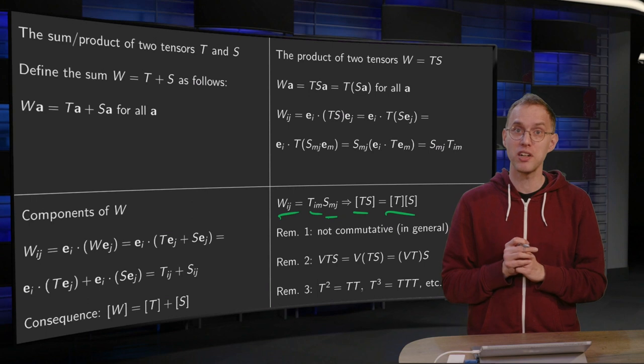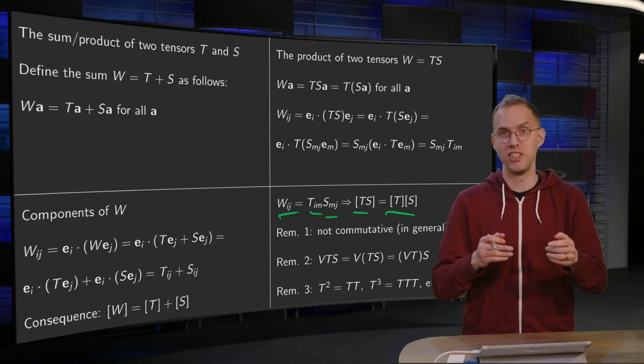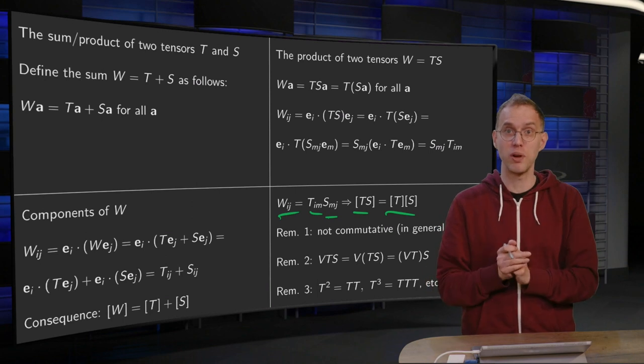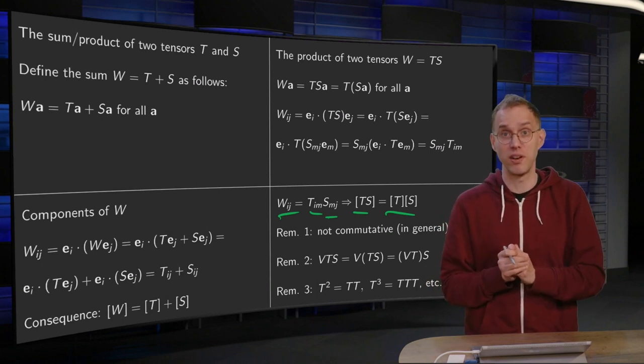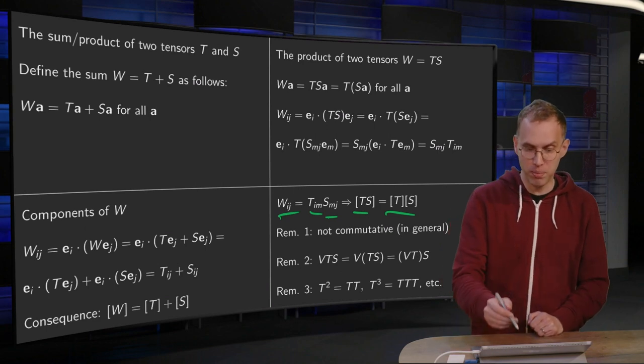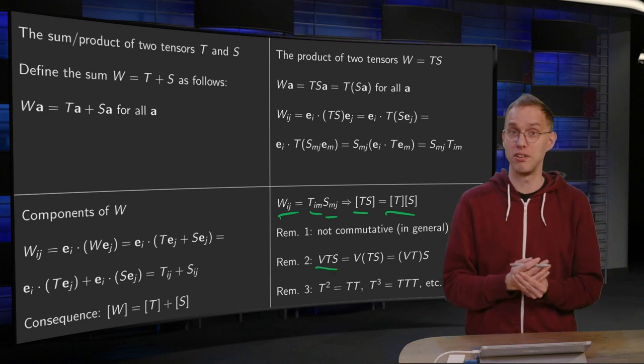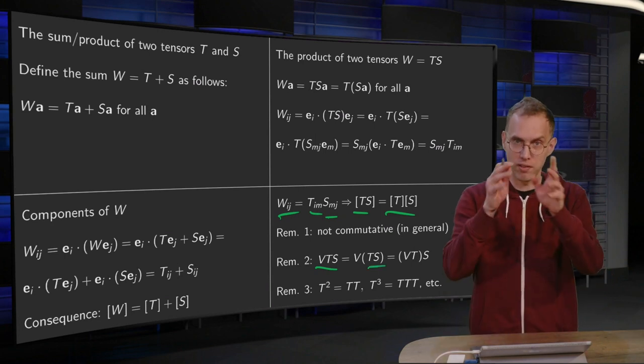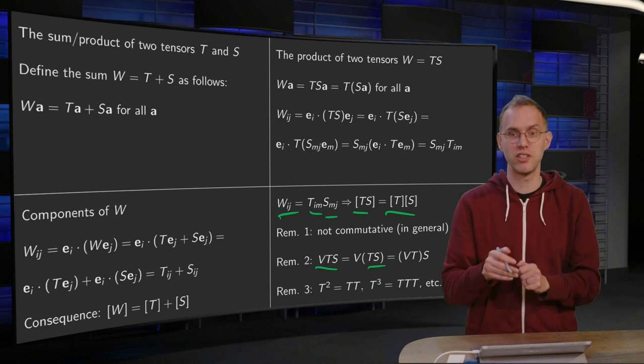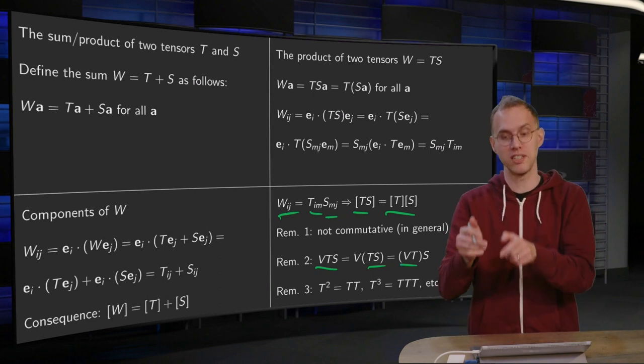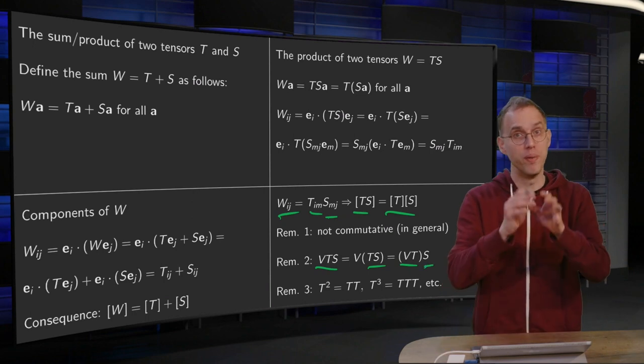So a few concluding remarks. As you know from matrices, T times S is not the same as S times T. So that holds here as well. So a tensor product is usually not commutative. Then if you have bigger products like V times T times S, how is that defined? It works like compute T times S first. You have a new tensor and then V times T times S. Or compute V times T first and then compute V times T times S. So that's how you do bigger products. You just split them into smaller ones.